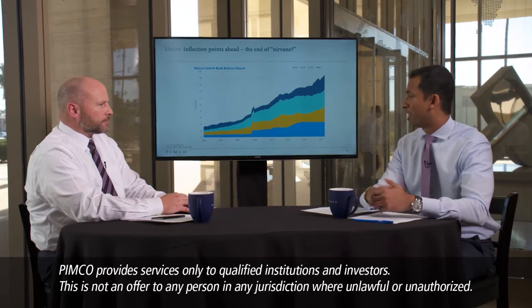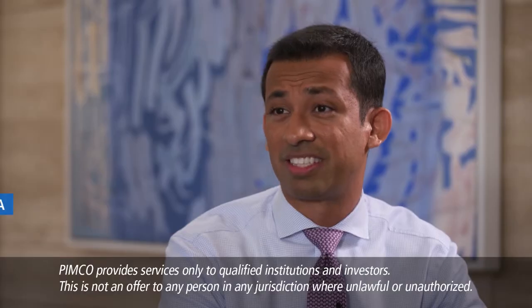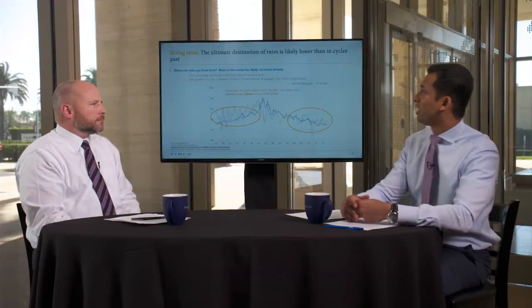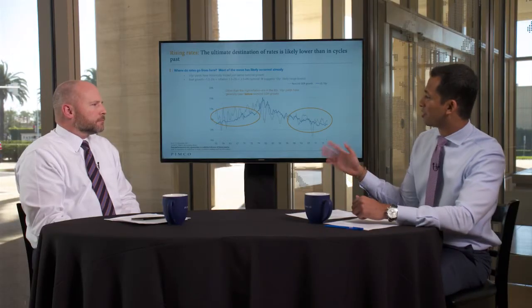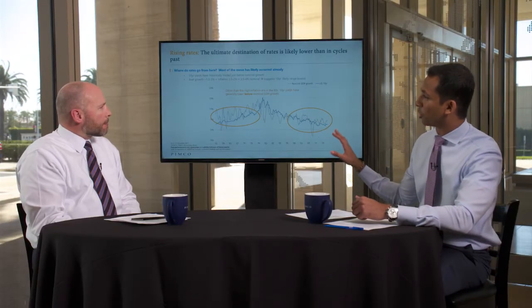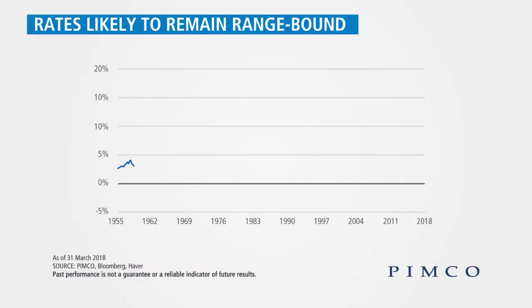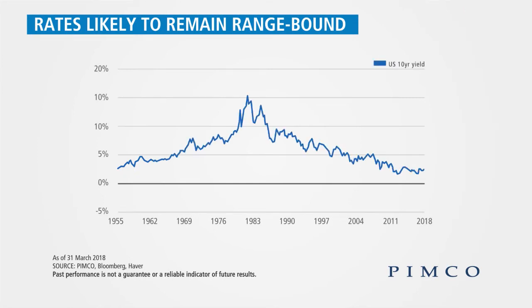As we think about this backdrop and being in the late stages of the economic cycle, we talked about the need for diversification. If you look at this chart, just to frame the historical relationship, we can unpack where interest rates are really going from here. The blue line shows the U.S. 10-year interest rates over time, and the gray line shows nominal GDP.